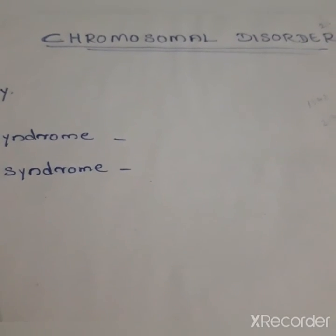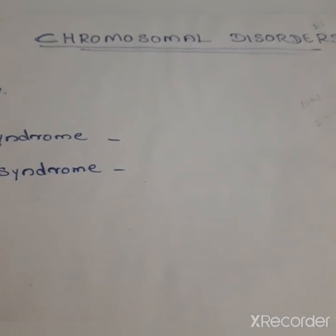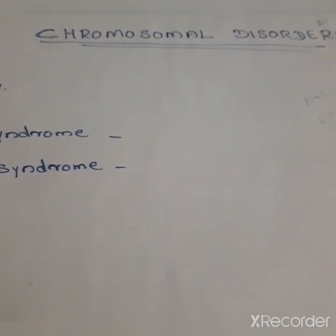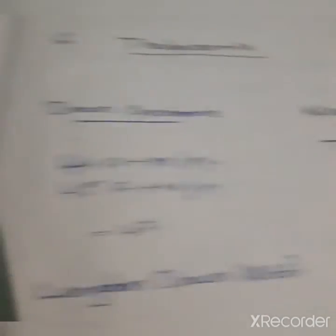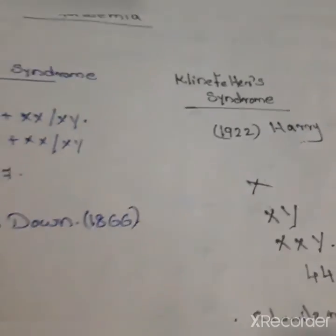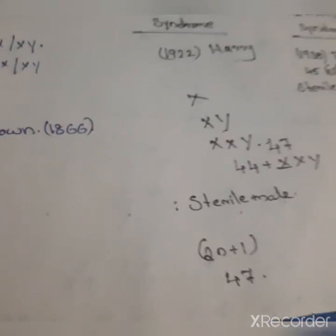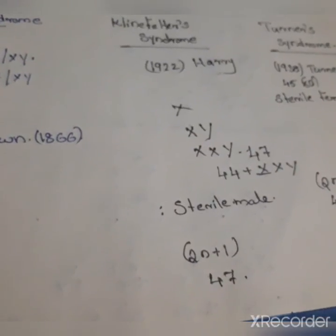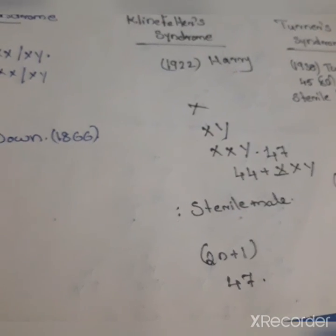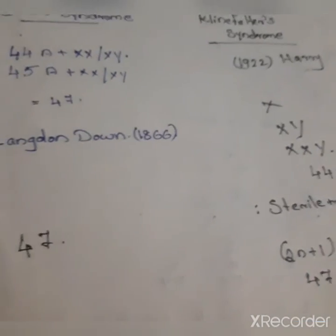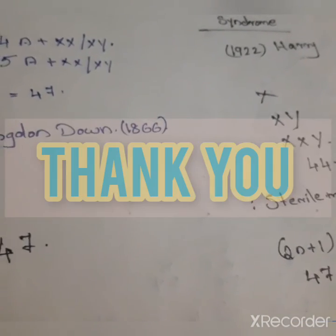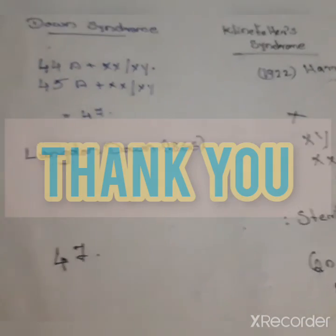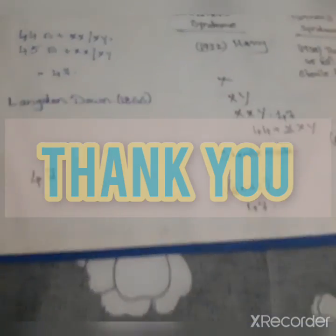This is about the different types of chromosomal disorders — Down syndrome, Klinefelter syndrome, and Turner's syndrome. Thank you.